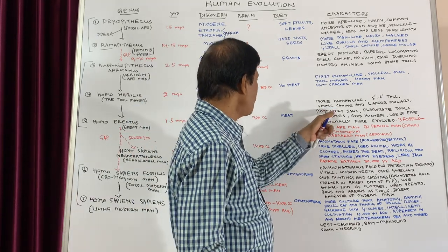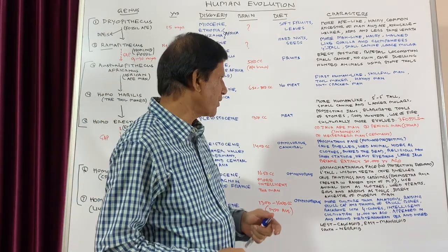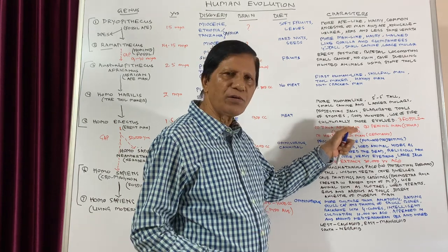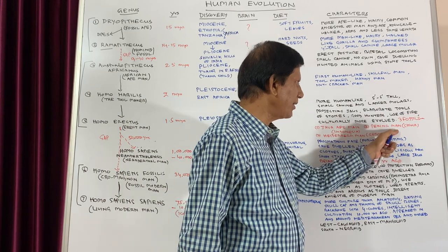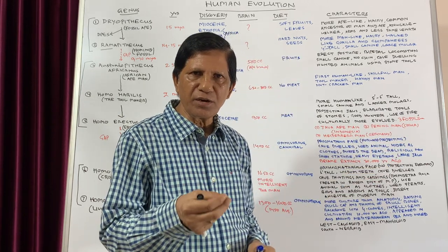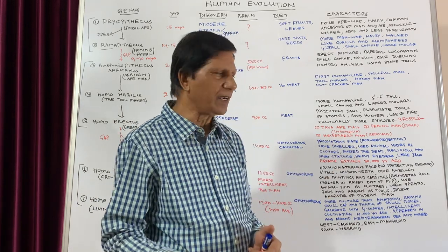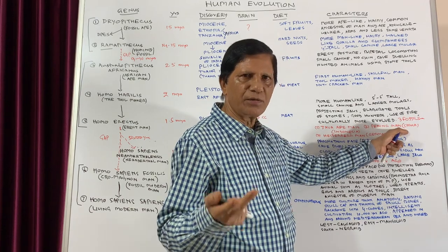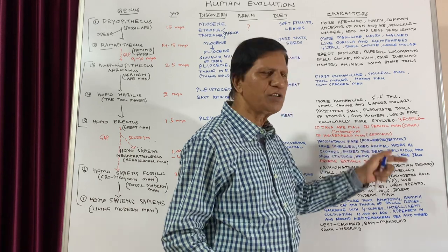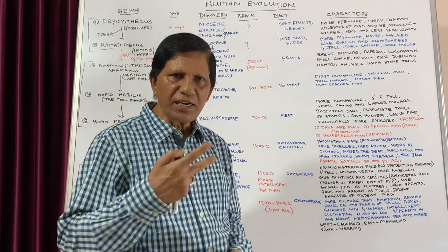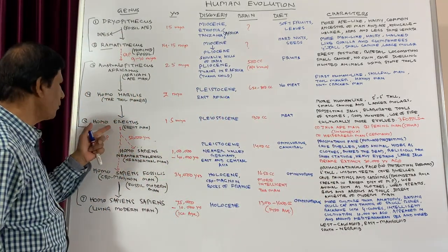From Homo erectus, three types of fossils have been found: Java Man, found in Java, Indonesia; Peking Man, found near Beijing, China; and Homo erectus found in Germany. These three fossil types were found in three different parts of the world, and all belong to Homo erectus.